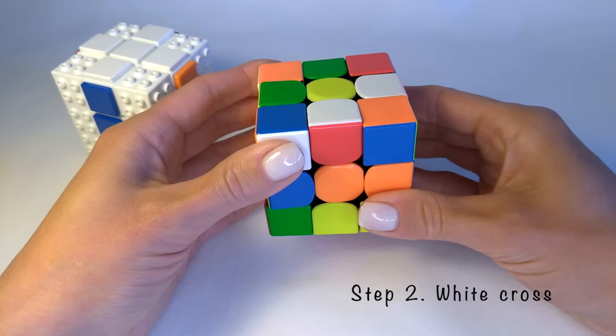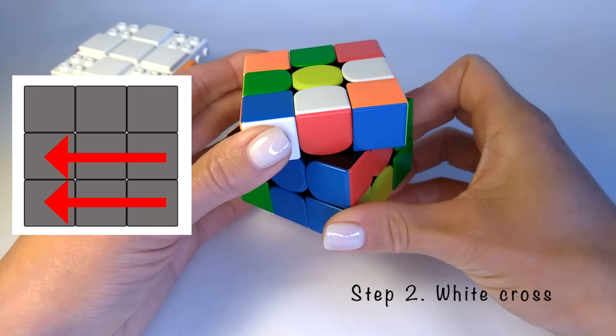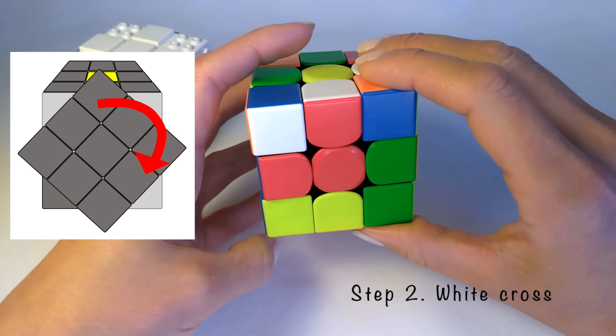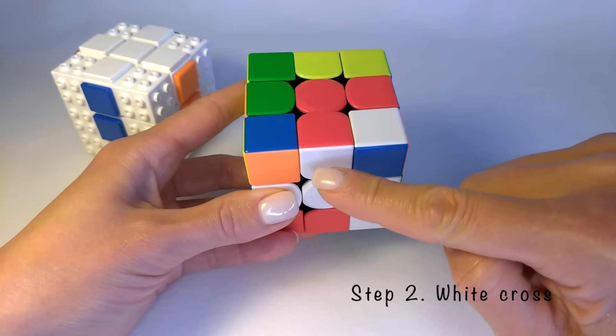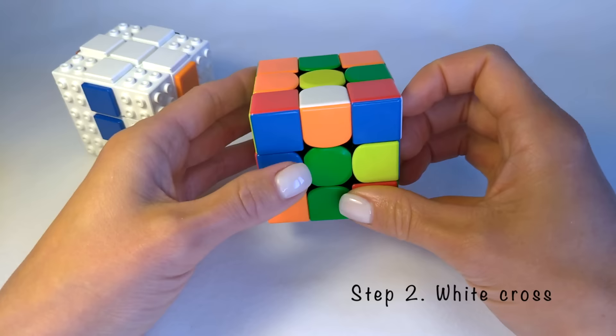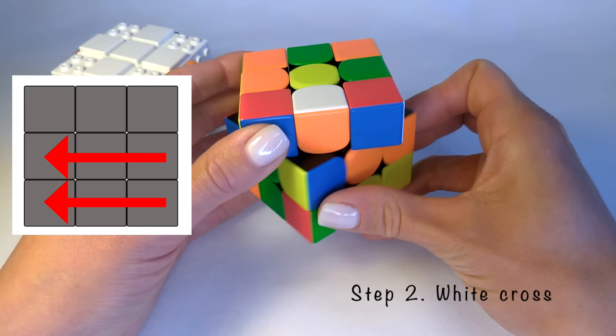We have to do the same actions with the last edges. Look at the white red edge. Rotate the two bottom layers and find the red center. When the red center matches with the red edge, turn this side clockwise two times. One. Two. The edge in the correct position because it's near the white center and the red center piece.